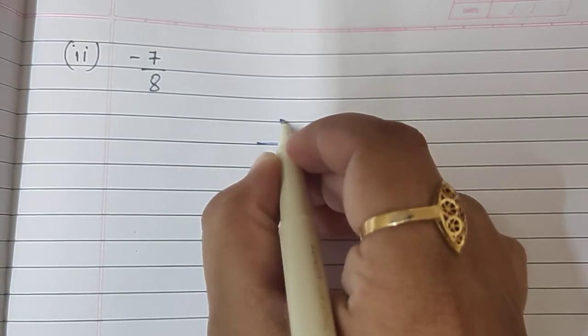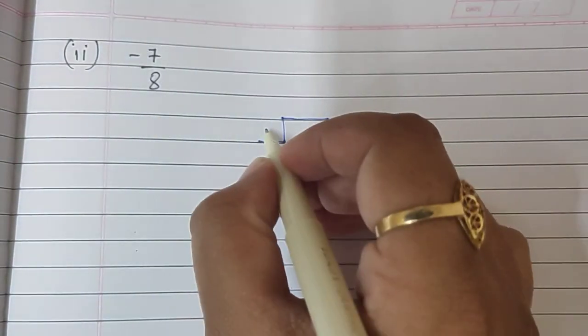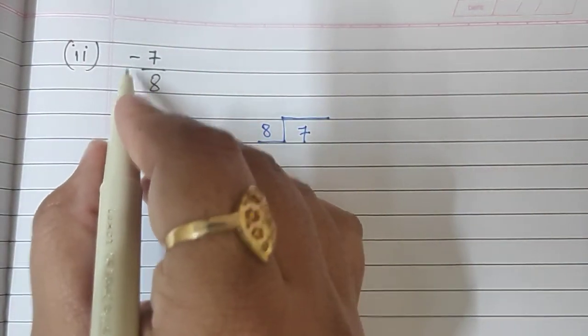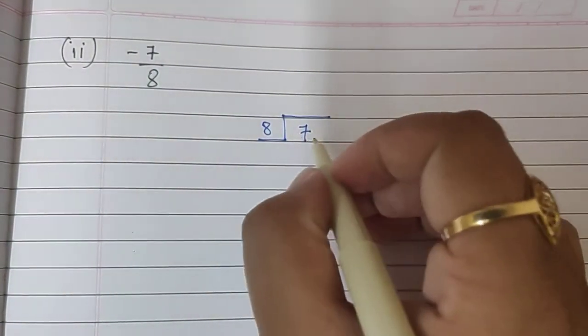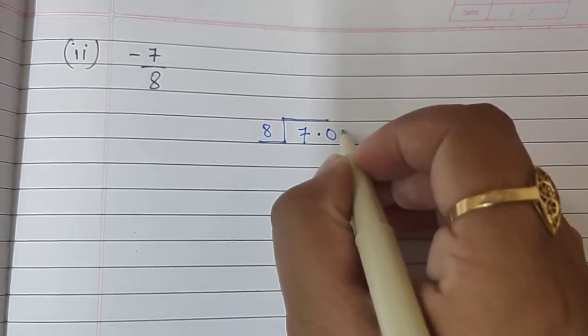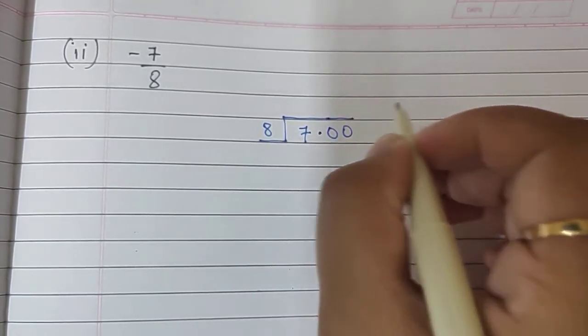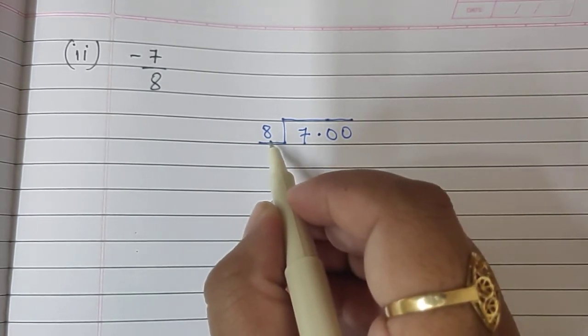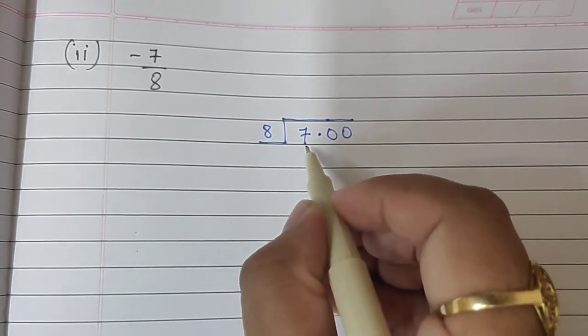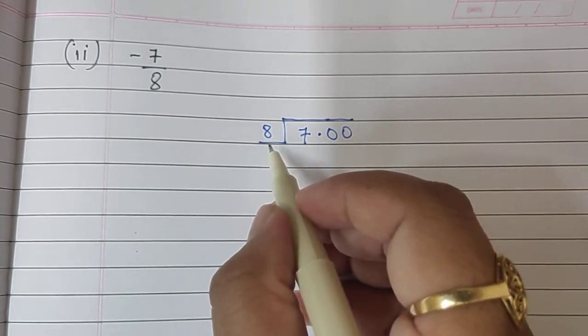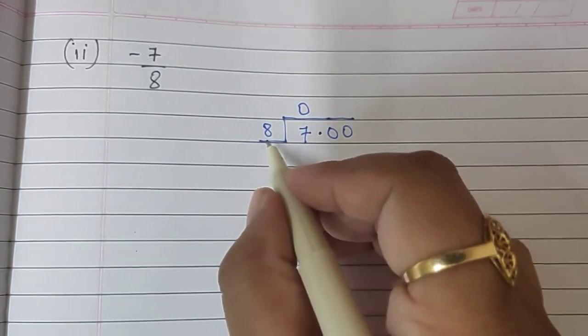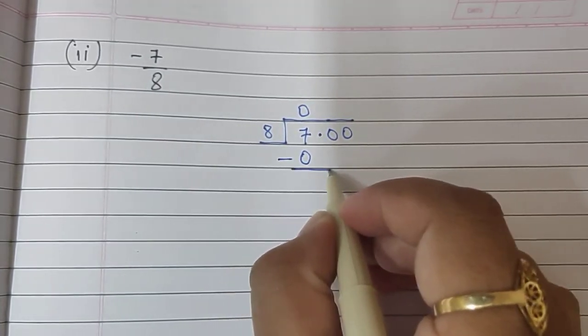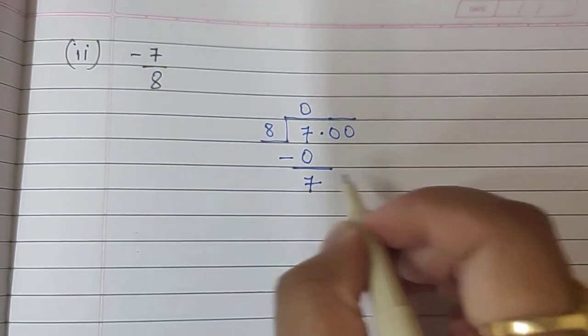Let's write it in the division form. 8 will come outside and 7 will go. We have not taken the minus sign here. We will write it in the answer directly. 7.00. Now, if you can see, this 7 will not go in 8 times table definitely because this 7 is smaller than 8. So, what we will write here, 8 zeros are 0 and we get 7 down.